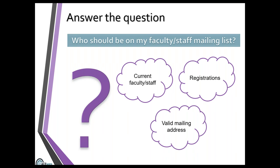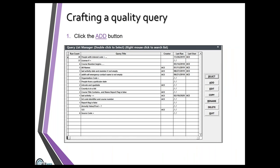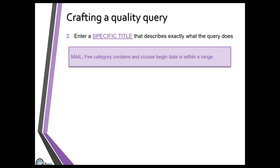So who should be on the faculty/staff mailing list? Current faculty and staff who have registrations — that was part of the question. Since this is a mailing address, just like the example last month where we didn't want an empty address field, we do want to include that here. We want a good list — we don't want to print more than necessary or export an Excel sheet to a mail house with bad records.